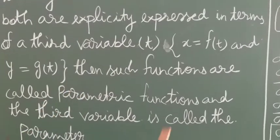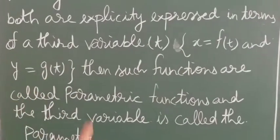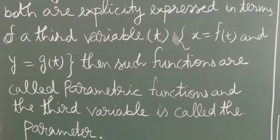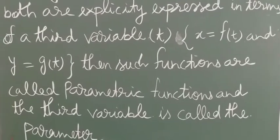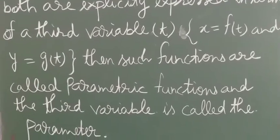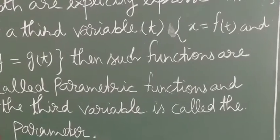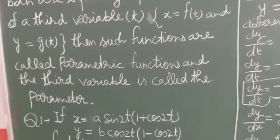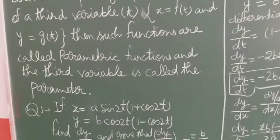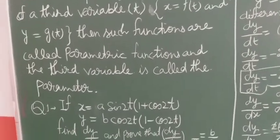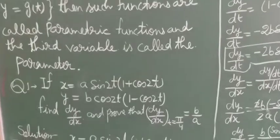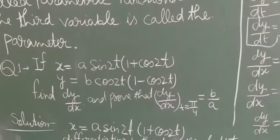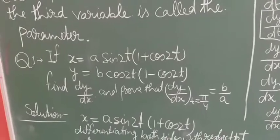Because both x and y are related to each other through t, t is the parameter here and x and y are the two main functions. Now we are going to take the first question — in parametric form, how can we find its derivative?